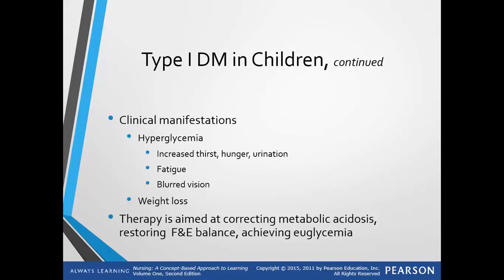Clinical manifestations are going to be hyperglycemia. They will have increased thirst, hunger, and urination, as well as fatigue and blurred vision. These manifestations of type 1 usually appear as an acute event that requires emergency intervention.